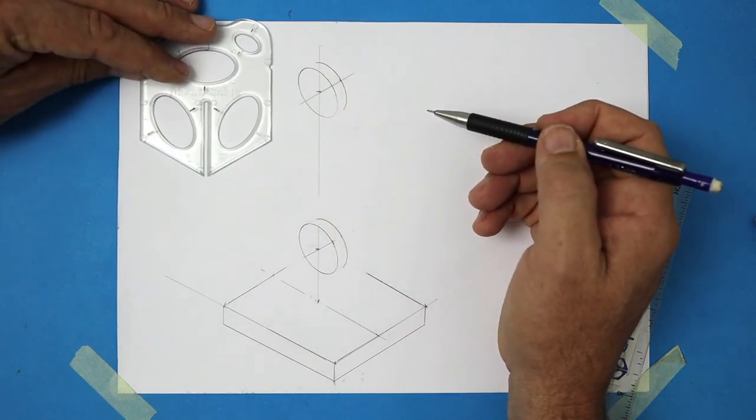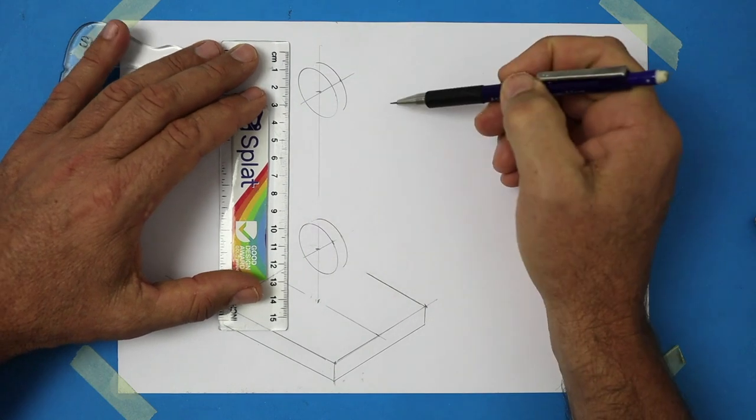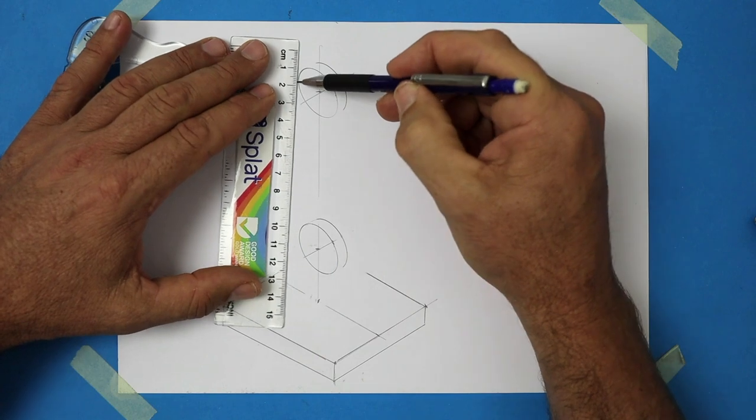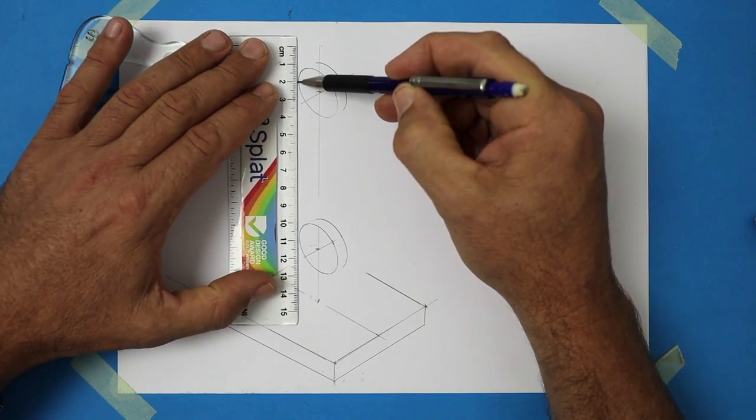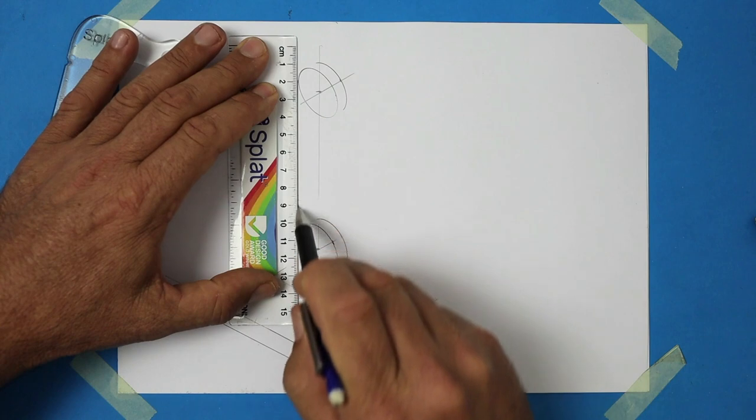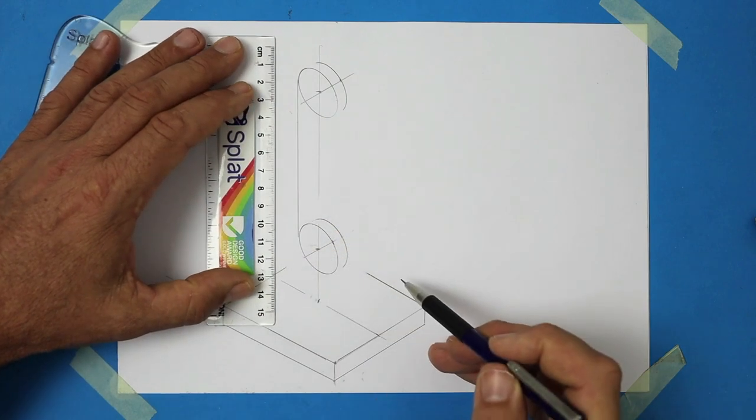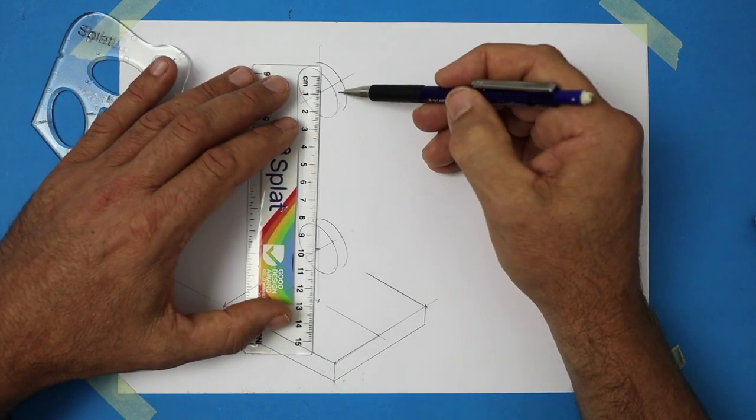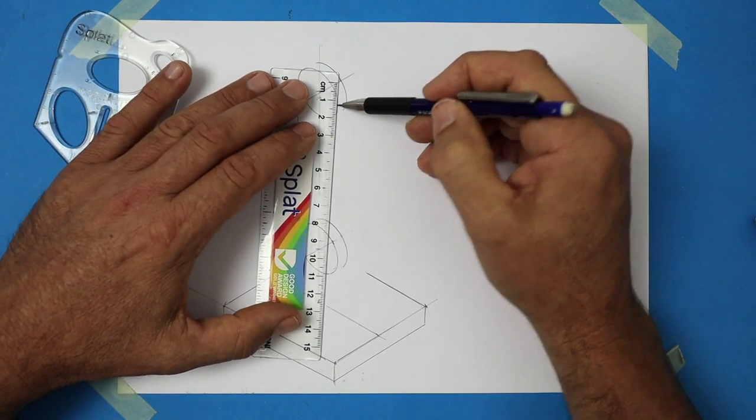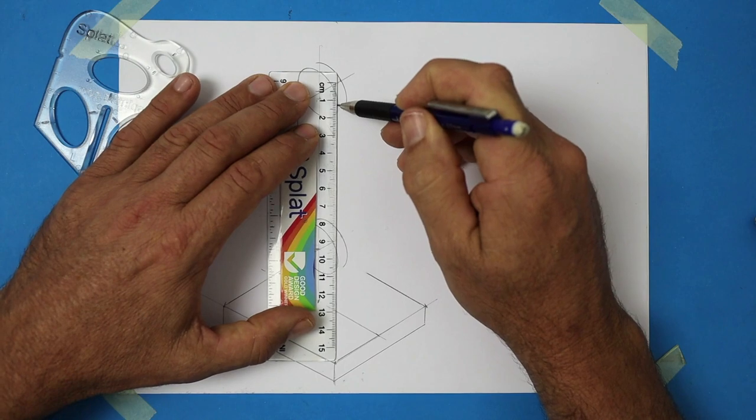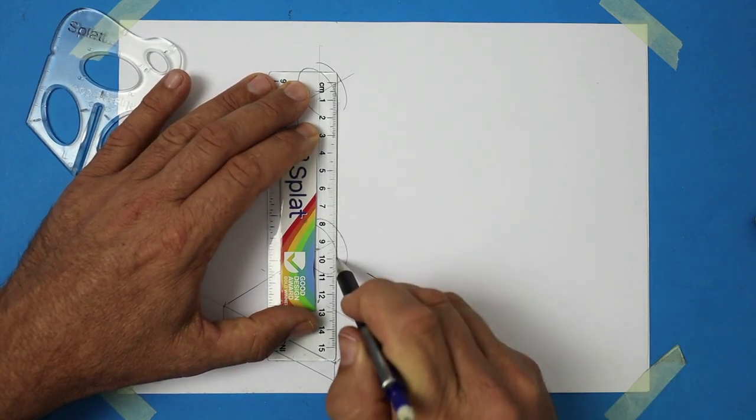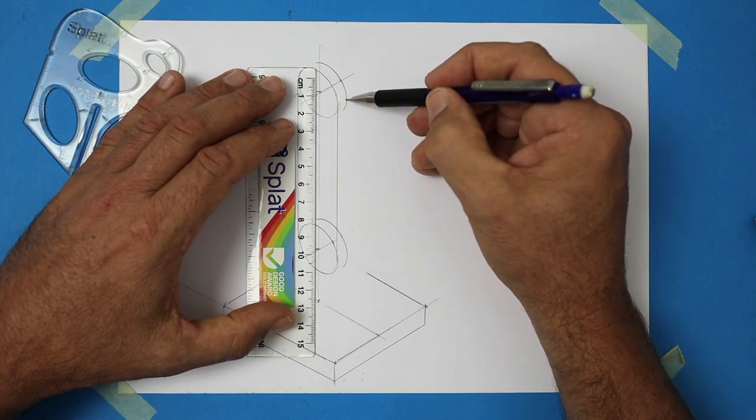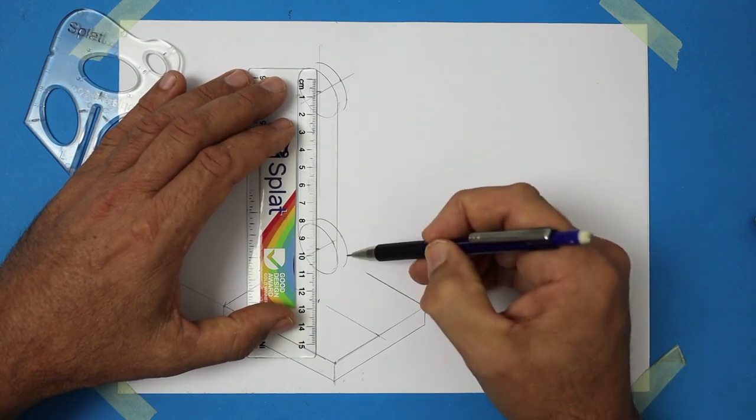Now we need to draw a line that just touches or is tangent to both of those circles. So line up the top ruler to the circle and then have a look at the bottom. Make sure that lines up and then draw in a line. Try and keep yours light until you've finished your drawing. On the right side of the ellipse, let's draw in a tangent so it lines up to the top circle. Swing the ruler at the bottom and draw on the very outside.